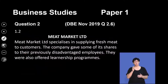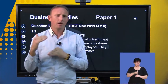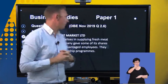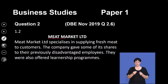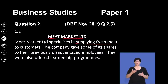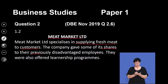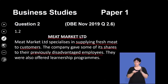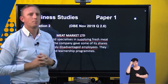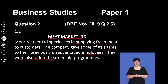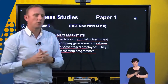We're going to move on to a contextual-based question now. I'm going to read it out to you — it's got to do with Meat Market Limited. Meat Market Limited specializes in supplying fresh meat to customers. The company gave some of its shares to their previously disadvantaged employees. That should already be ringing a couple of bells for you. They were also offered learnership programs. So we can generally see where this question is going.